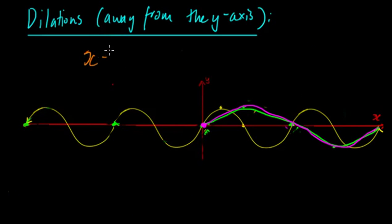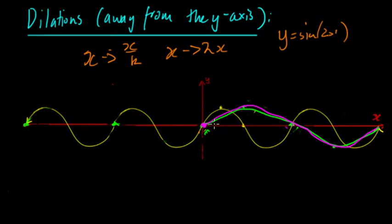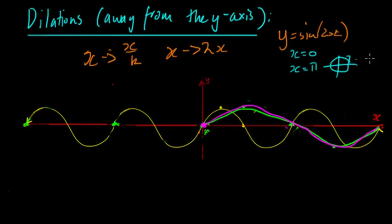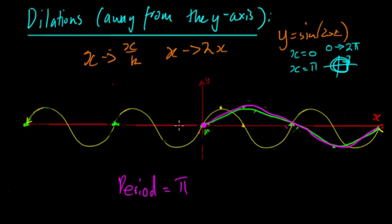What happens if we replace x with x/k but k is a fraction? That means we're going to replace x with 2x, giving y = sin(2x). Before, the x/2 elongated the sine graph and increased the period. So you can think about what's going to happen with 2x — it will be the opposite. To get around the unit circle, we can go from x = 0 to x = π, because when you times π by 2 you get 2π, which is one full revolution. So the period is now going to equal π, and the graph will be compressed rather than elongated.